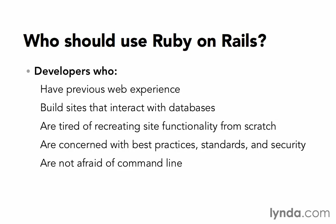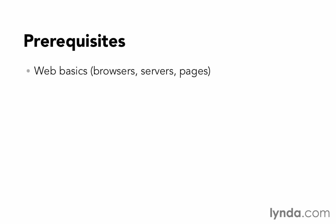Many people wonder about the prerequisites to learning Ruby on Rails. The first thing is that you want to make sure you have the web basics down already — that you understand the way that browsers work and the way that web servers and web pages work. You don't need all of the intricacies, but just make sure you have a fundamental understanding of how the web works.